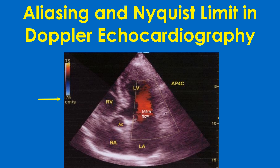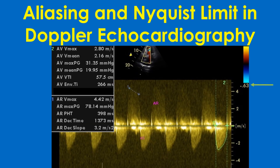In this image, the color bar is displayed on the left upper corner, obviously from a different machine. Both flow away from and towards the transducer have a Nyquist limit of 75 cm per second. Notably, Nyquist limits are different for color Doppler and HPRF Doppler even during a single imaging session.